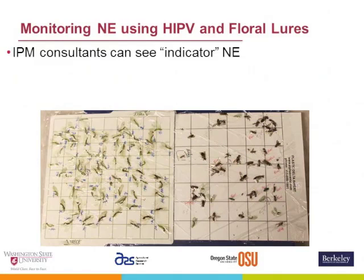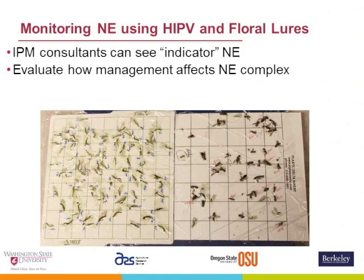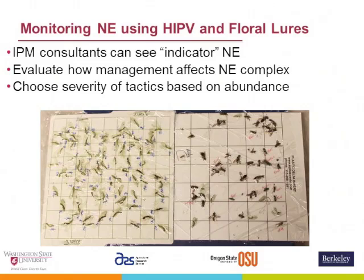One of the nice things about these HIPV traps is that we can give them to IPM consultants so they can actually see the consequences of their actions. We have lacewings and mostly syrphid flies. They can evaluate side by side, or before and after, what their different management tactics did to the natural enemy complex. The idea is for them to start choosing the severity of what they're doing based on the natural enemy complex as well as the pest population level.